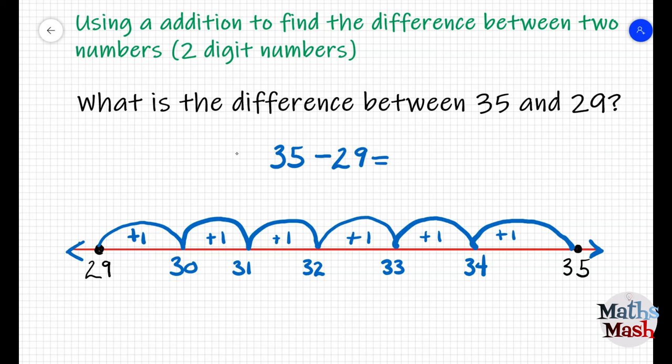You can see that I went up in hops of one each time, writing the size of the hop and the number I've landed on. I can add up all the hops of one, and I found that I had six hops altogether. So, the answer to the number sentence 35 take away 29 is going to be six. So, the difference between 35 and 29 is six.